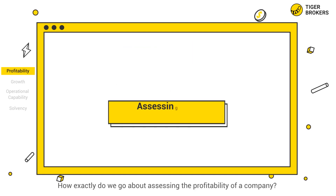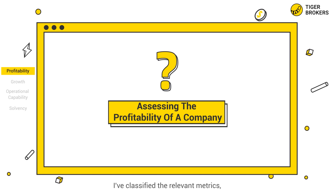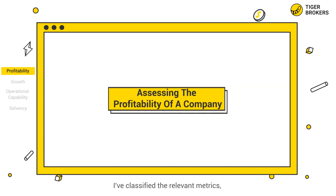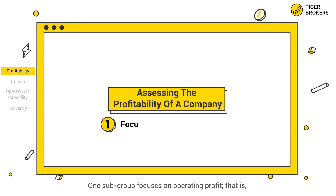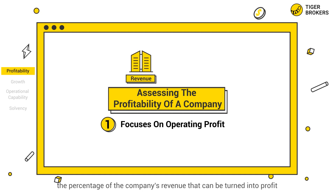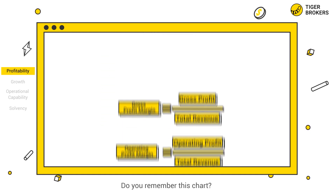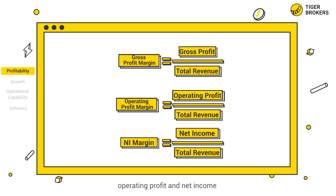How exactly do we go about assessing the profitability of a company? I've classified the relevant metrics, which we have already learned, into two subgroups. One subgroup focuses on operating profit — that is, the percentage of the company's revenue that can be turned into profit. Do you remember this chart? It clearly illustrates the relationship between gross profit, operating profit, and net income.